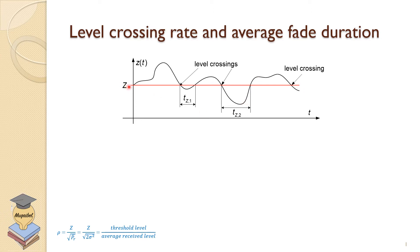Z represents the level, the threshold required for communication. For that level, we can see that the signal for some duration is above the required threshold. And then it crosses, which we call the level crossing. It crosses the level and goes down.